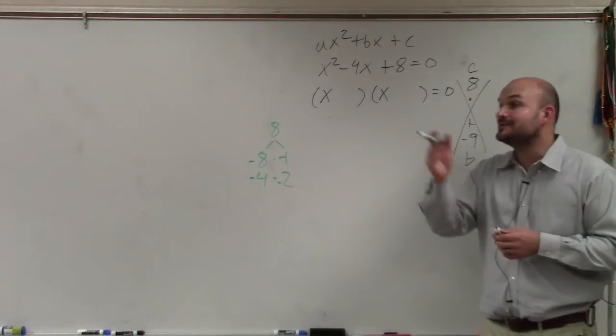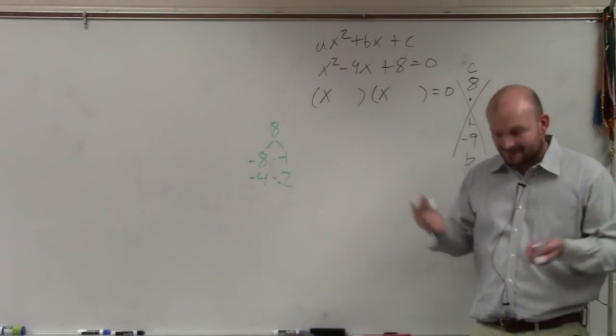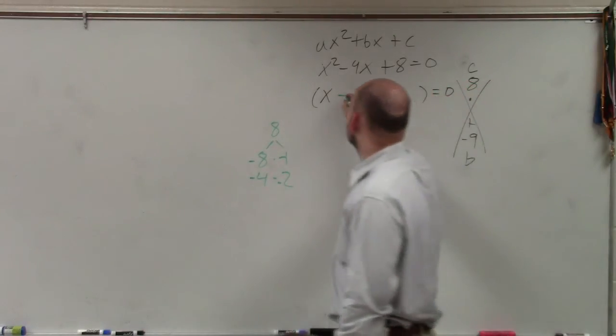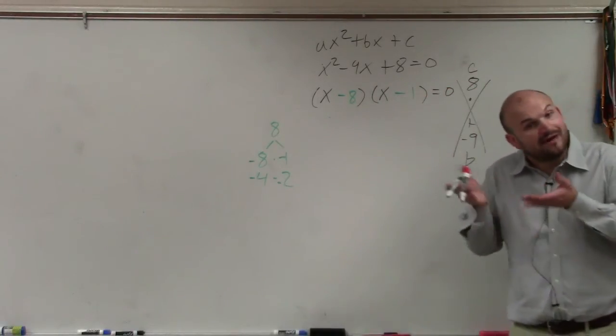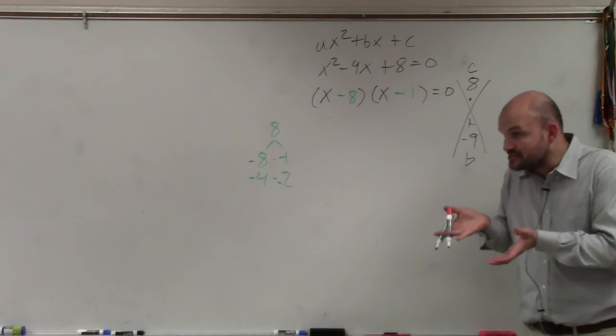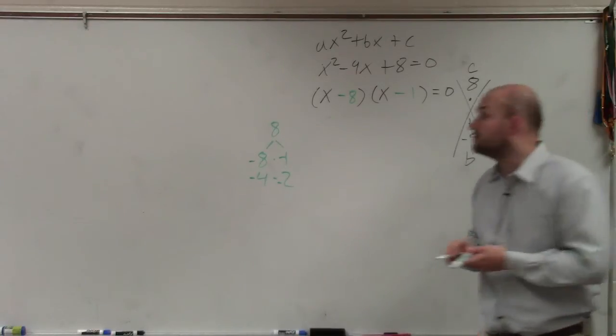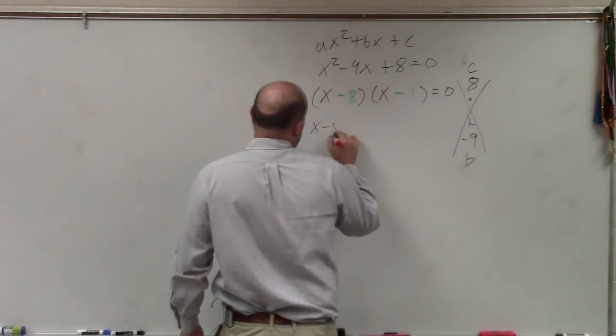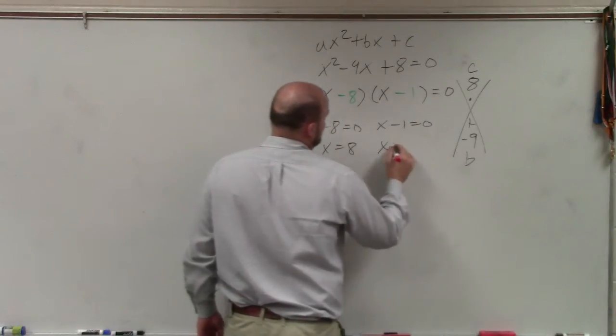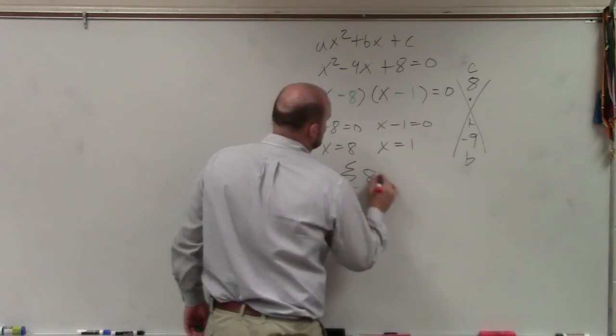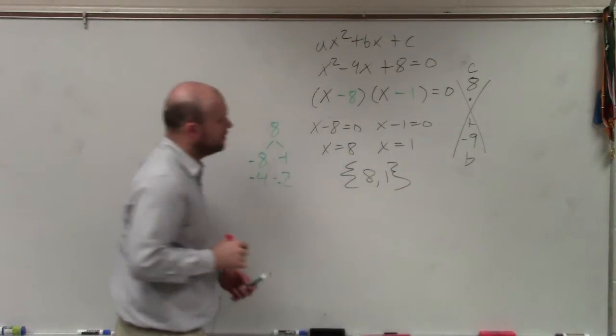So obviously, what are going to be the two? Negative 1 and negative 8. So we add those in. And now, again, we have an expression times an expression equal to 0. So we apply the zero product property. X minus 8 equals 0. X minus 1 equals 0. X equals 8. X equals 1. Solution set 8, 1.